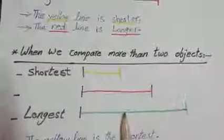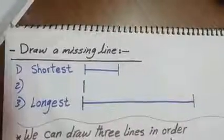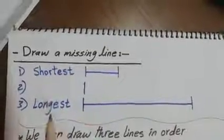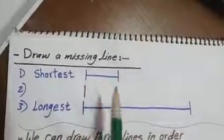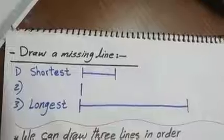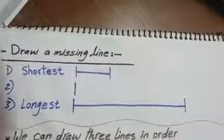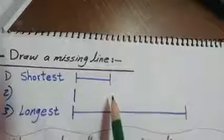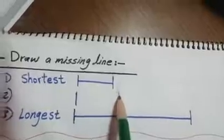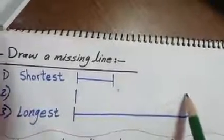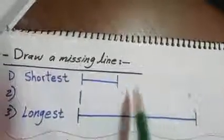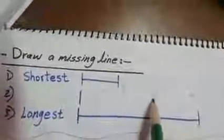Here we will draw a missing line — shortest and longest. I have these two lines: the shortest one and the longest one. We can draw the missing line anywhere in between. It has to be longer than the shortest one, so it must start here, and shorter than the longest one, so it must end here. I can draw it anywhere in this area.